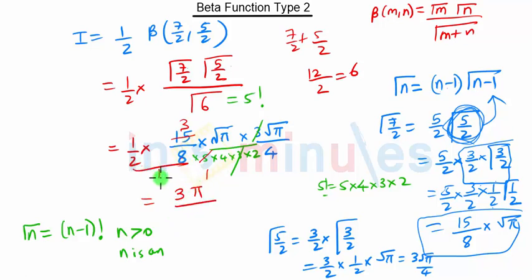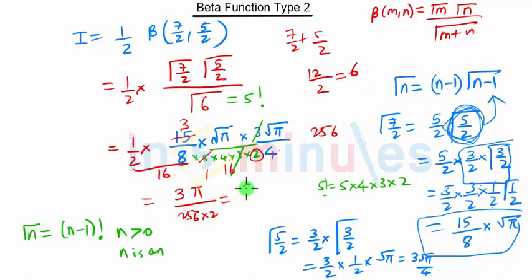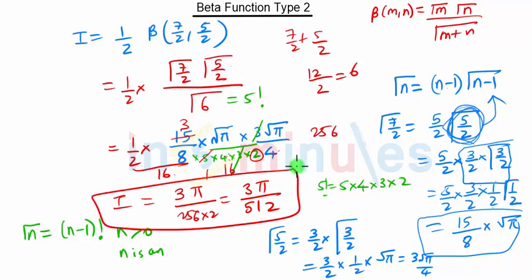8 into 2 is 16, and 4 into 4 is 16. So 16 into 16 is 256, and 256 into 2 gives 512. So we get 3 pi upon 512. This is our final solution of this problem, and this is how we solve problems on beta function type 2. More such problems we will see in our next video, so stay tuned for our future lectures.